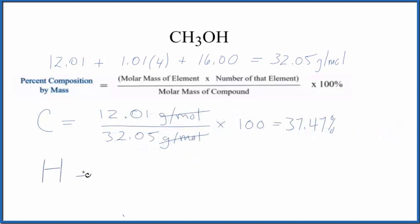For the hydrogen, hydrogen on the periodic table 1.01 grams per mole. We have three plus one, so the number of the element here, three plus one, we have four hydrogen atoms. Then we divide it by the molar mass of the compound, multiply by a hundred to get a percent, we end up with 12.61%.